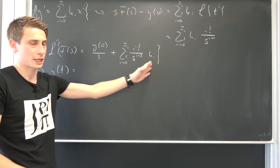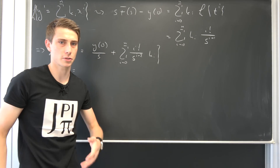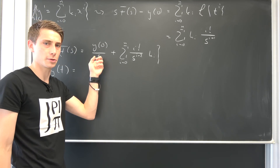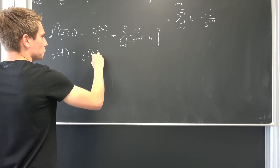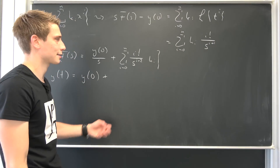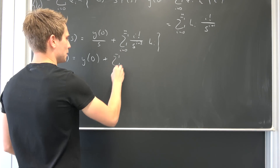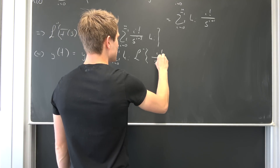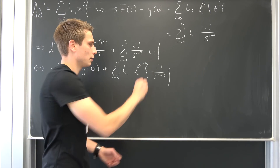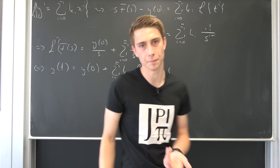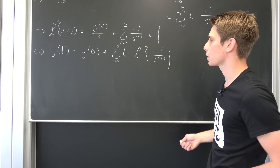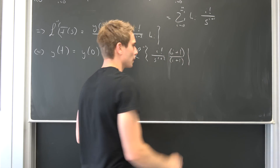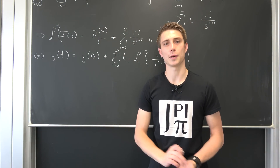We can use linearity of the inverse Laplace transform to take the inverse of every term separately. The inverse Laplace transform of y(0) over s is just the constant y(0). Then we have the sum from i equals 0 to n of k_i times the inverse Laplace transform of i factorial over s to the i+2. To evaluate this, we advance the fraction by (i+1). When dealing with Laplace transforms, you have to play around with the expression algebraically. This gives us (i+1) factorial, and we can bring 1 over (i+1) outside, so the inverse Laplace transform evaluates to t to the i+1.